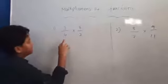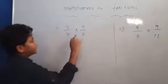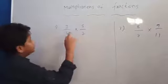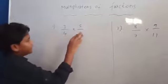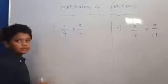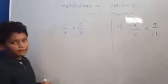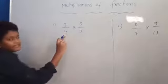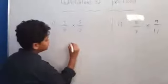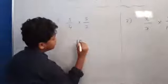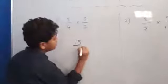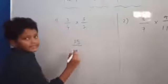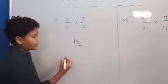First one: 3 by 4 into 5 by 7. Numerator multiplication: 3 into 5 — 5 3's are 15. Denominator: 4 7's are 28.